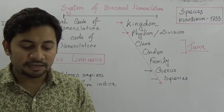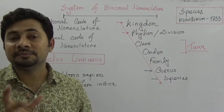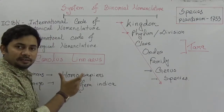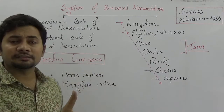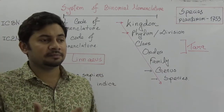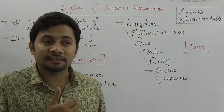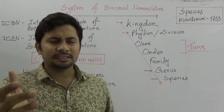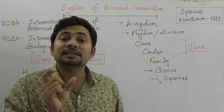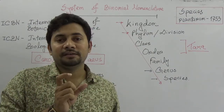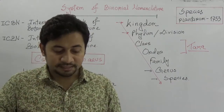For example: Homo sapiens for humans, Mangifera indica for mango, Apis indica for honeybee, Panthera tigris for tiger, and Solanum tuberosum for potato. Each name is distinct and unique for each different organism. That is principle number three.